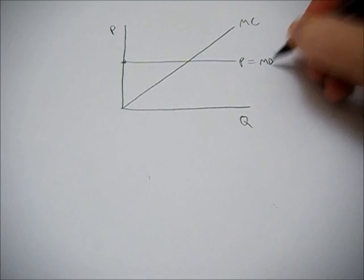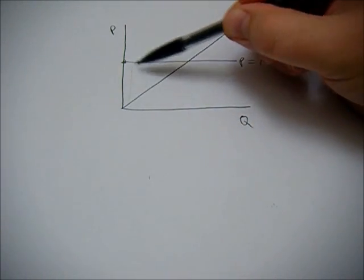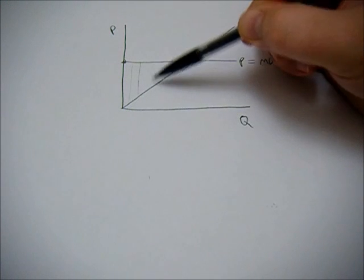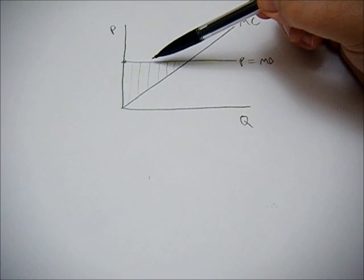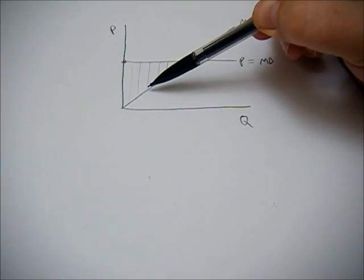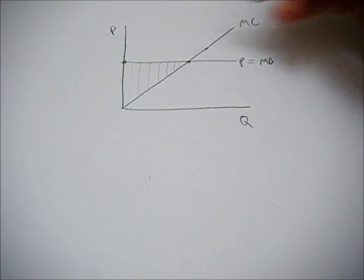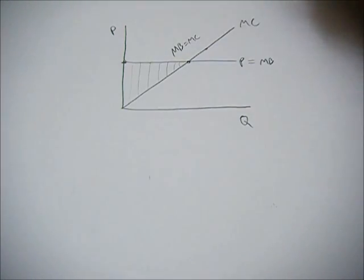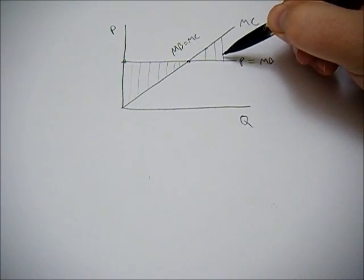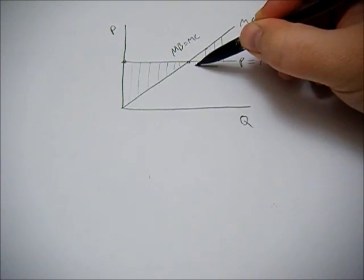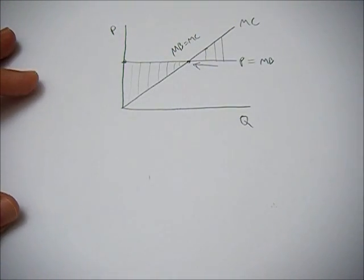Here, price equals our marginal benefit for that competitive firm. As we produce more and more, you can see that price is above our marginal cost. So we keep wanting to sell more goods because we can sell them at a higher price than it costs us to produce them. But when we go beyond this point of MB equals MC, then our costs are now higher. And that's not a good thing. We could benefit by lowering our production and going back to our marginal benefit equals marginal cost.